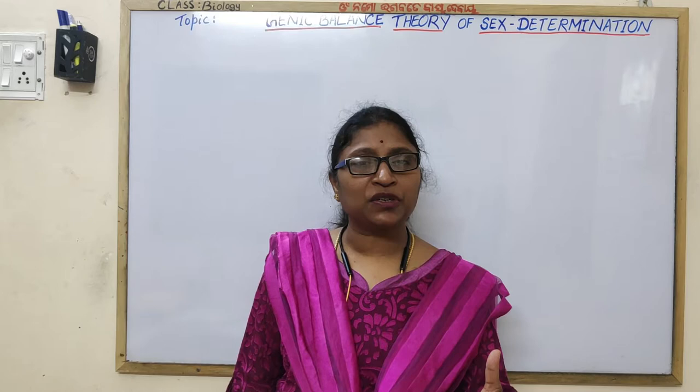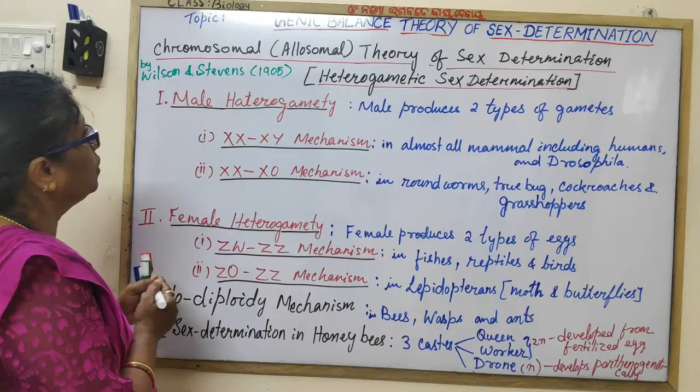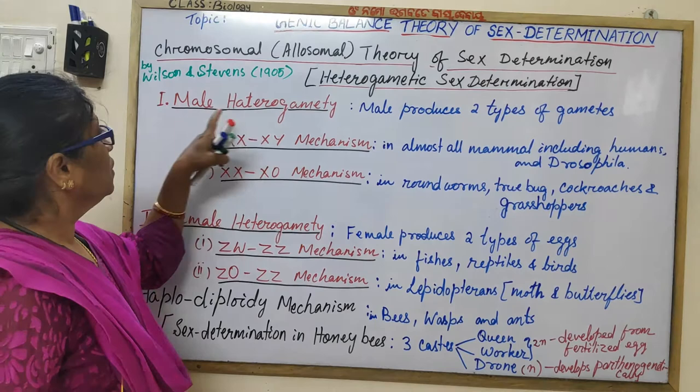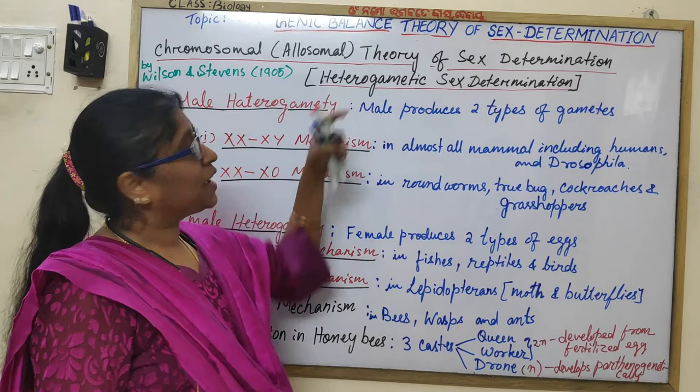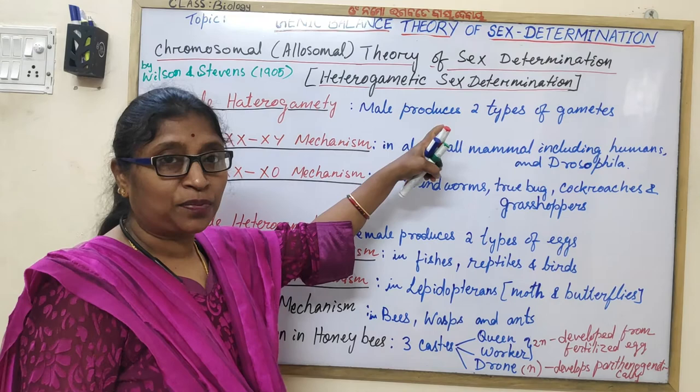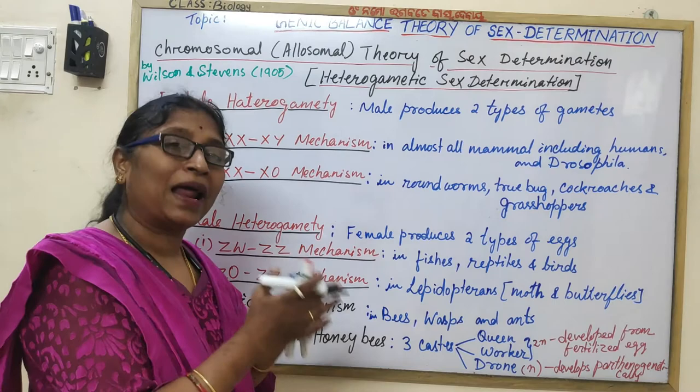Under the chromosomal theory of sex determination, we have gone through various chromosomal mechanisms such as male heterogamity and female heterogamity. This theory is also known as allosomal theory or heterogamity sex determination. It was given by Wilson and Stevens in 1905.